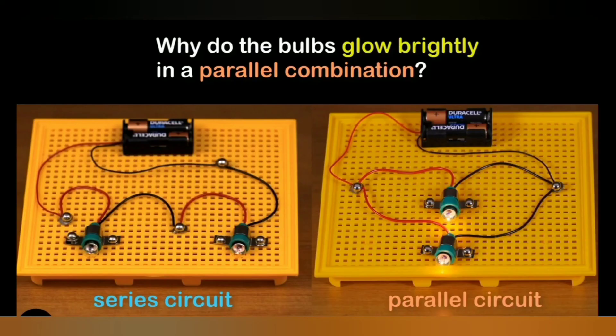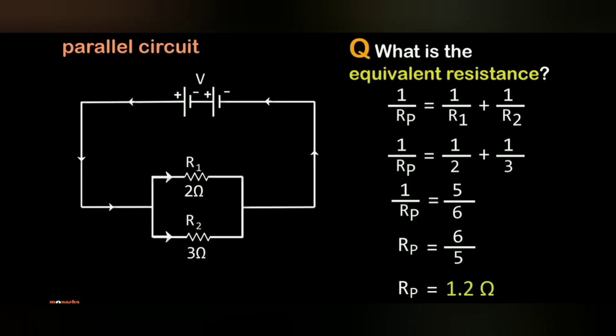Let us have one question for you: Why do the bulbs glow brightly in a parallel combination than in series? You have to answer this question. Now, what is the equivalent resistance of R1 and R2 when they are 2 Ohms and 3 Ohms respectively? The equivalent resistance is 1.2 Ohms, which is very less when compared to the individual resistances of R1 and R2.